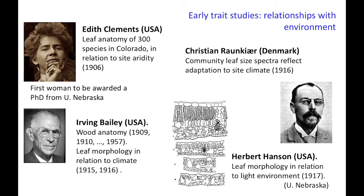If you go back a century, it wasn't quite such a broad church. Some of the early papers — people measuring plant traits, though they didn't call them traits so much then — are on the screen now. Edith Clements from the University of Nebraska more than a century ago did a beautiful study quantifying the detailed leaf anatomy of over 300 species in Colorado, measuring the thickness of different tissue types and looking at the relationship to iridity. Herb Hansen, also at Nebraska and influenced by Frederick Clements, was interested in leaf morphology in relation to light environment, showing that shade-growing species typically had leaves with high cell area and high water contents.